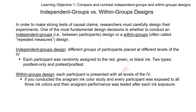One way to do that is by giving the same participants both drugs, so you can match them that way. For example, in an independent groups design each participant is randomly assigned to the red, green, or black ink group. Whereas in a within groups design, each participant would use red ink, green ink, and black ink, and their performance would be tested after each ink exposure. So you've got the same participants across all conditions — that's that first type: repeated measures.